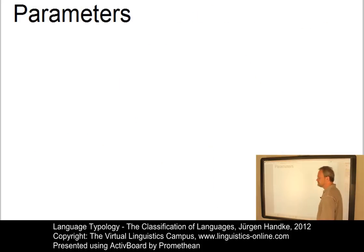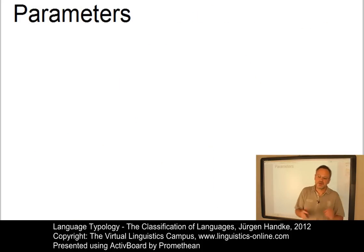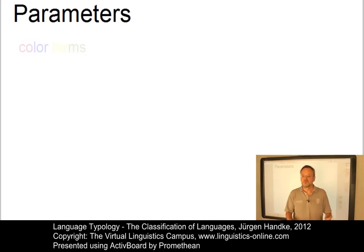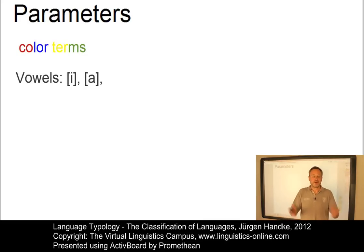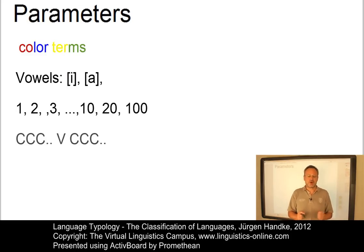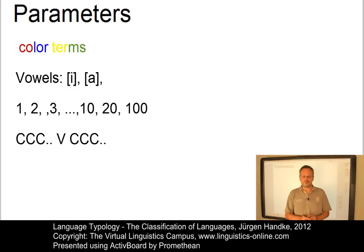In principle, one could choose any linguistically relevant parameter to classify languages — for example, the use of colour terms, the number of vowels of a language, the numerical system a language uses, or the complexity of syllables, to name a few.